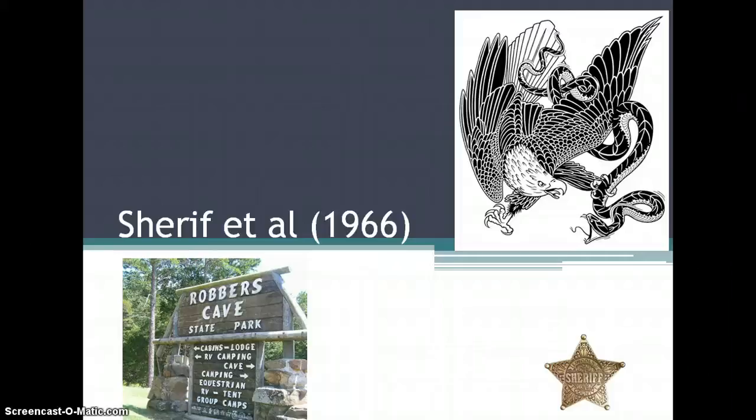Hi again. This is going to be the summary of Sheriff's study in 1966. Tajfel came up with his social identity theory, which explains why people are prejudiced. Sheriff had a slightly different theory called realistic conflict theory — he thought that you needed competition.